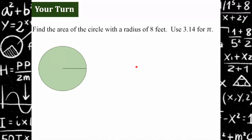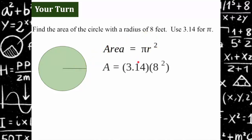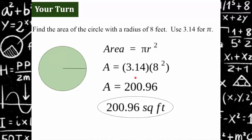Your turn. Find the area of a circle with a radius of 8 feet using 3.14 for pi. Please pause the video and come back to check your work. Welcome back. We're going to use the formula area equals pi times r squared. Since we're given the radius of 8 feet, we substitute in what we know: pi is 3.14, the radius is 8. On your calculator, 8 times 8, then multiply by 3.14, for an answer of 200.96 square feet.